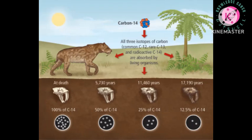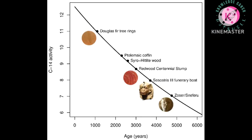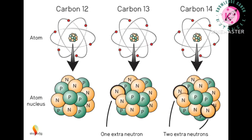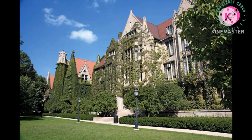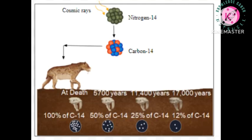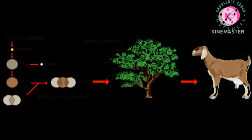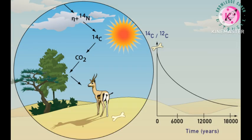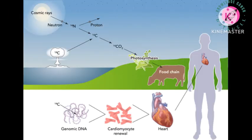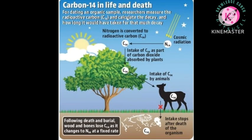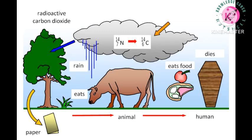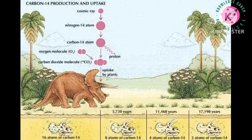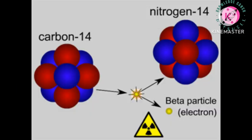Radiocarbon dating, also referred to as carbon dating or carbon-14 dating, is a method for determining the age of an object containing organic material by using the properties of radiocarbon, a radioactive isotope of carbon. The method was developed in the late 1940s at the University of Chicago by Willard Libby. It is based on the fact that radiocarbon C-14 is constantly being created in the Earth's atmosphere by the interaction of cosmic rays with atmospheric nitrogen. The resulting C-14 combines with atmospheric oxygen to form radioactive carbon dioxide, which is incorporated into plants by photosynthesis. Animals then acquire C-14 by eating the plants. When the animal or plant dies, it stops exchanging carbon with its environment.